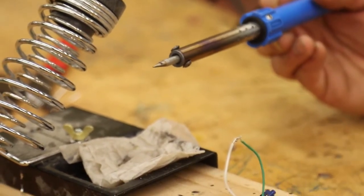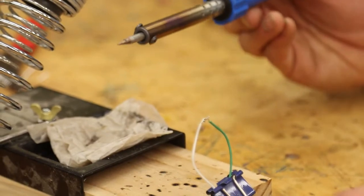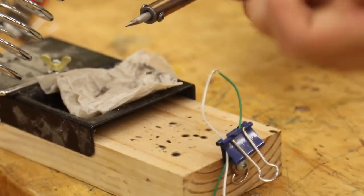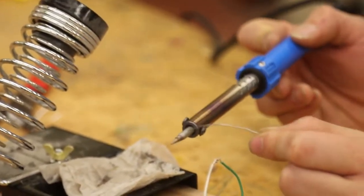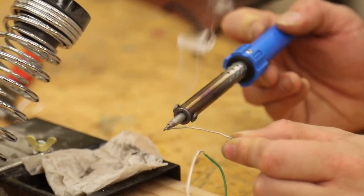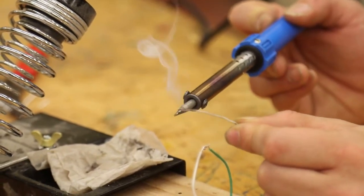The next step that you're going to do is you're going to tin the soldering iron. That is taking the solder and just melting a bit on the soldering iron.